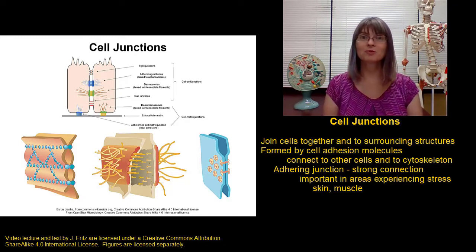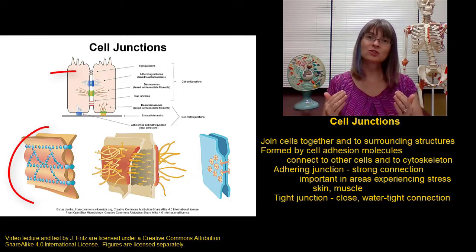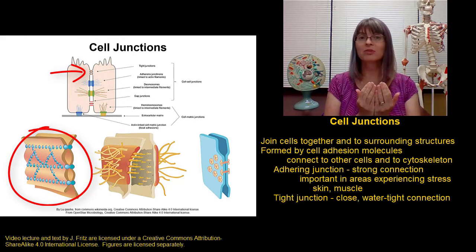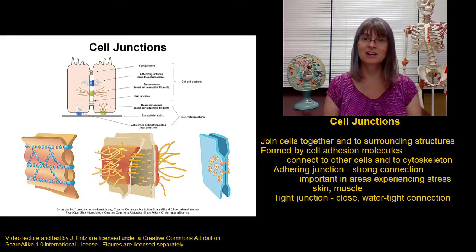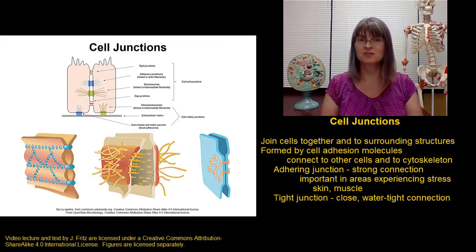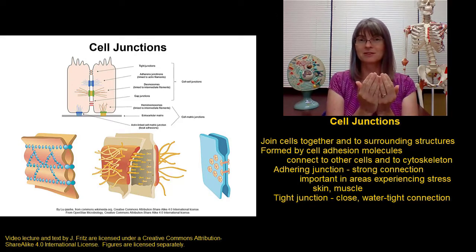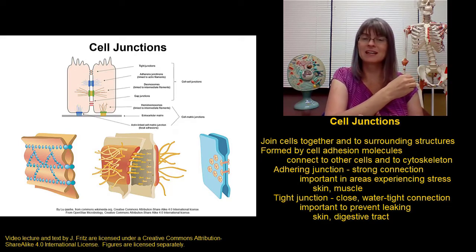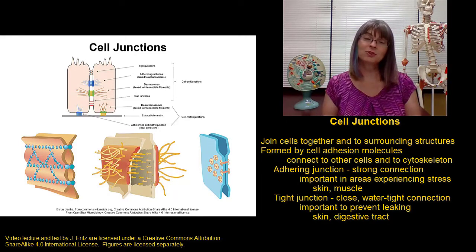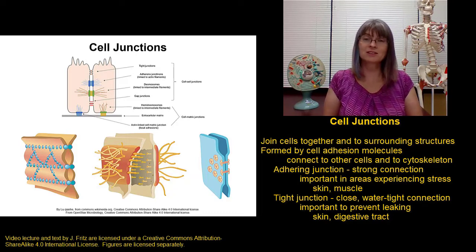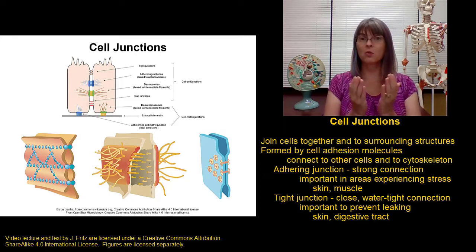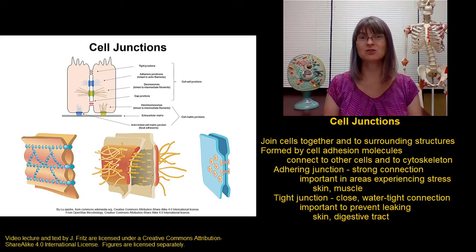The second type of junction is a tight junction. A tight junction holds cells very closely together. This is to help prevent leaking between the cells. It's almost like it forms a zipper between two cells by pulling them really close together. These are important in areas like the skin where we're trying to prevent things from leaking out or the digestive tract where we're trying to hold in digestive enzymes that we don't want to leak into our abdominal cavity. Any place we're trying to maintain a waterproof connection where nothing can leak between we're going to find tight junctions.